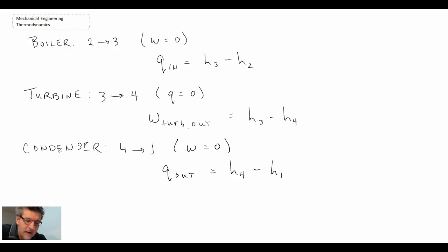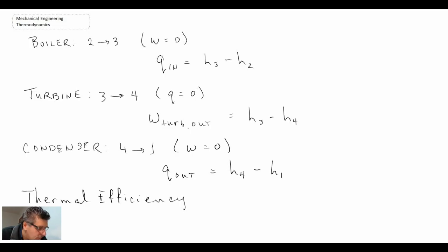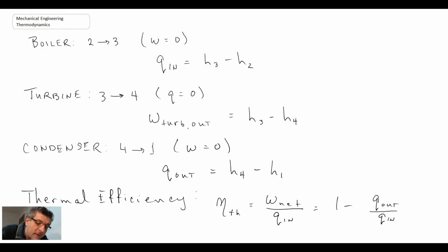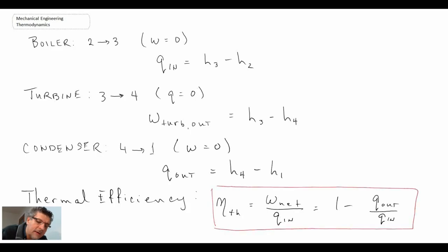Those are all the equations to examine each individual component within the Rankine cycle. Finally, the thermal efficiency can be calculated using those results. Given a Rankine cycle, you determine all the different enthalpies, plug them into these equations, and get net work — evaluating both the turbine output and the pump input. Knowing Q-in and Q-out also lets you determine thermal efficiency. We'll now go into more detail looking at each individual component and how they operate, examining the performance of each component within the Rankine cycle.